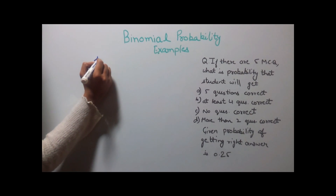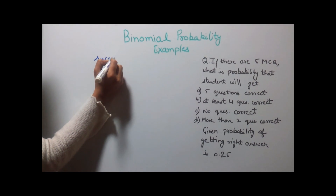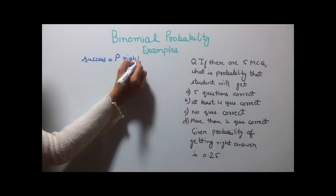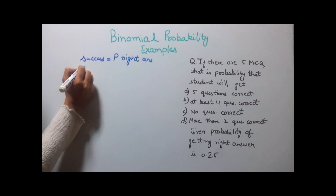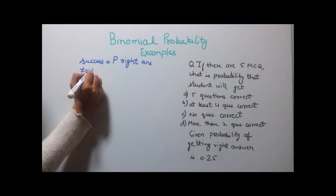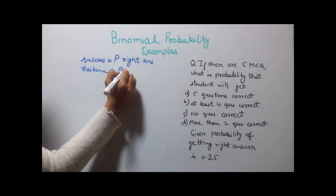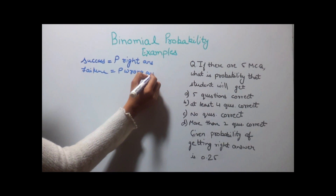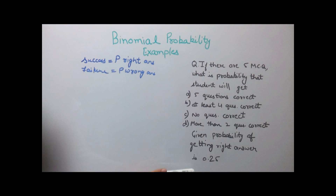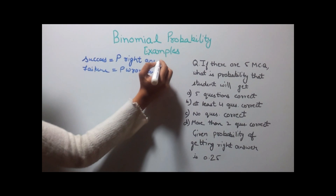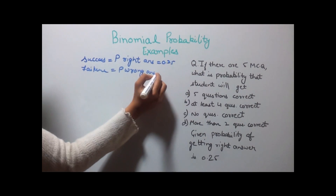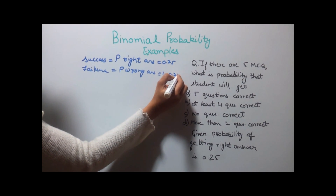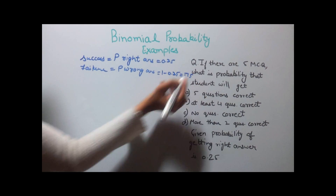Here, success would be the probability of getting the right answer and failure would be the probability of getting the wrong answer. It is given that the probability of getting the right answer is 0.25. So, the probability of a wrong answer would be 1 minus 0.25, which is equal to 0.75.